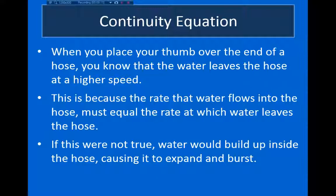So if we take, for example, something like a garden hose, you know that when you place your thumb over the end of a garden hose, the water will spray out of the hose at a higher speed. And the reason that this happens is that the rate that the water is flowing into the hose has to be equal to the rate that the water flows out of the hose. So when you cover up the hose, the water has to spray out at a higher speed.